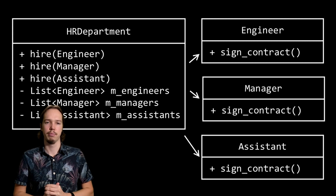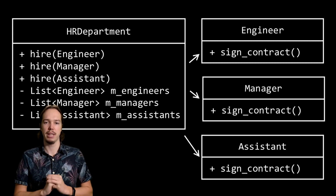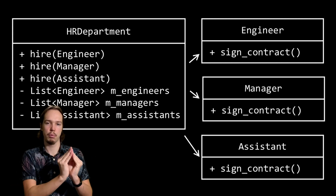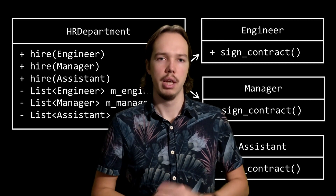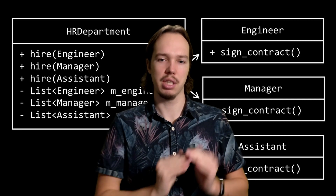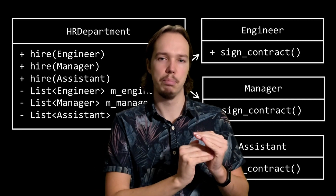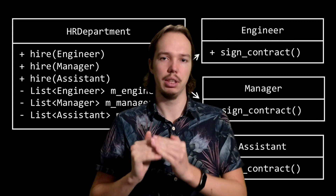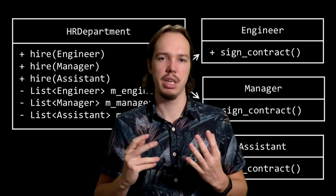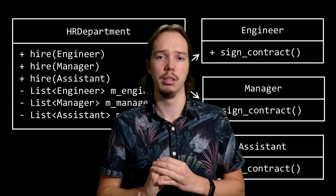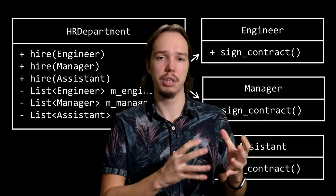So how could we change the design? How could we make the HR department class open for extension, while at the same time keeping it closed for modification? Let's start by identifying the source of the problem. In the current design, we need to modify the HR department class because its hire functionality depends on concrete implementations. We have a hire function for every type of employee, which doesn't really make a lot of sense because every employee is treated the same way.